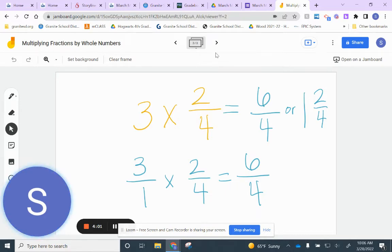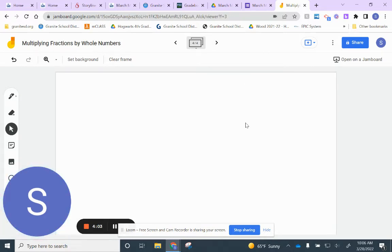Let's move on to another practice one. Let's go with four times three ninths. Go ahead and solve this one. You should get twelve ninths, right? Or one and three ninths.